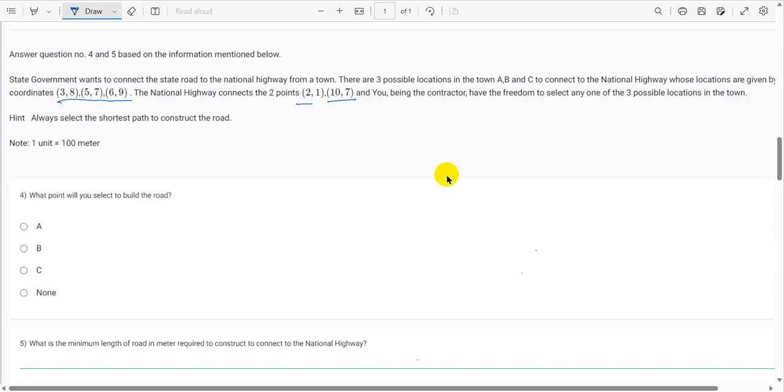First question is what point will you select to build the road? Here it is given the national highway connects the two points, so we can get the equation of national highway passing through these two points. So the equation of national highway: y minus 1, slope is 7 minus 1 divided by 10 minus 2, into x minus 2.